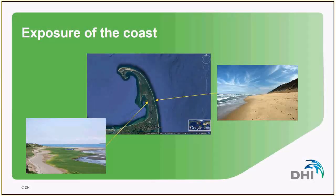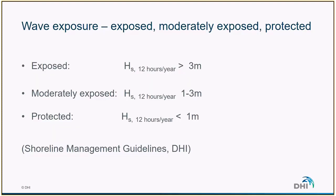One way of classifying the coast is based on exposure to the wave climate. This satellite picture from Cape Cod in the US shows two neighboring beaches separated by maybe three or four kilometers that have a completely different visual aspect. This is mainly due to the exposure of the stretch of coast to the waves. On the east coast there is good exposure and a beautiful white sandy beach, while on the west coast it's more protected and therefore the beach is not as beautiful — there is even some vegetation.